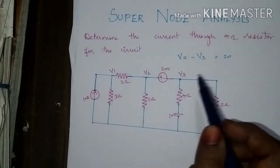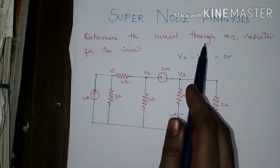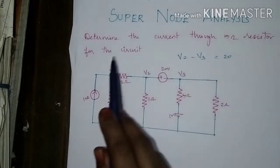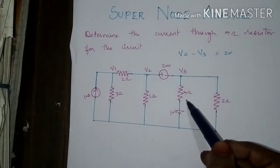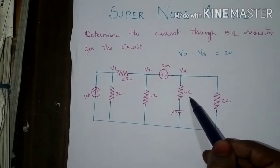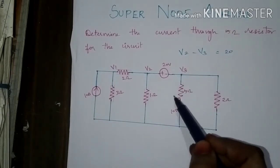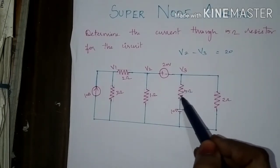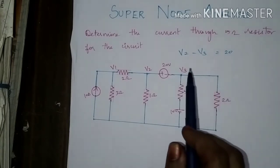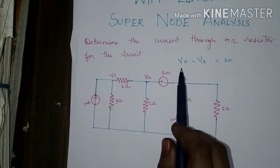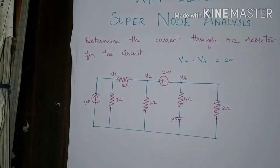Let's see the problem: determine the current through the 5 ohm resistor of the circuit. The 5 ohm resistor is present at the third node. The super node equation is written as V2 minus V3 equal to 20 volts.